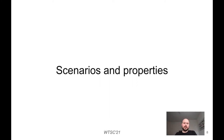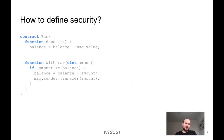Now let me talk about scenarios and properties. Consider this simple bank contract consisting of two functions: deposit and withdraw. The deposit function increases the balance by the value of the call, and the withdraw function pays out a specified amount to the caller if there is enough balance. Is this a secure contract? Well, it depends. If we compare it to a traditional bank, probably not, because we expect only the owner of the money can withdraw it. But with a different definition where anyone can withdraw any money, it's a correct bank contract.